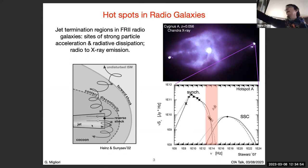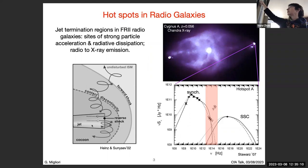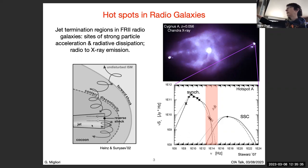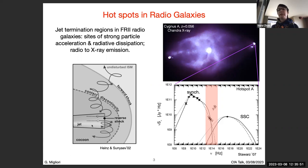This is a simple scheme of the standard picture where particles in the jets are accelerated in the reverse shock and then backflow into the lobes. On the right is a Chandra X-ray image of a radio galaxy where you can see luminous X-ray hotspots. Hotspots are typically observed in radio but emit up to X-rays, and looking at the spectral energy distribution, this can be modeled with synchrotron mechanism from radio to optical.